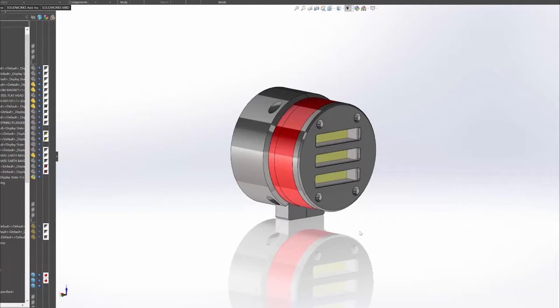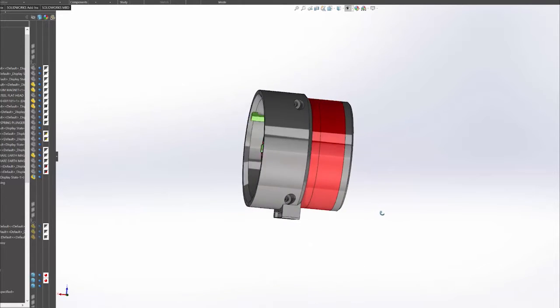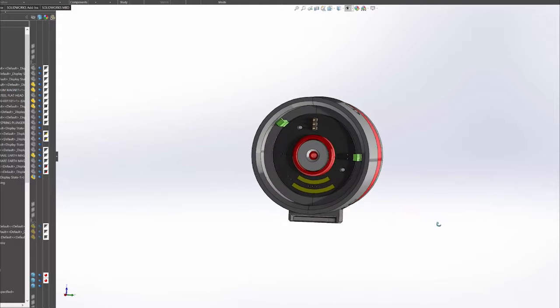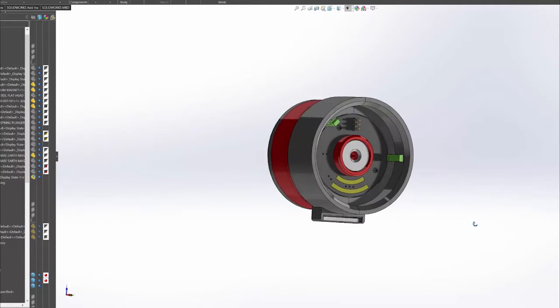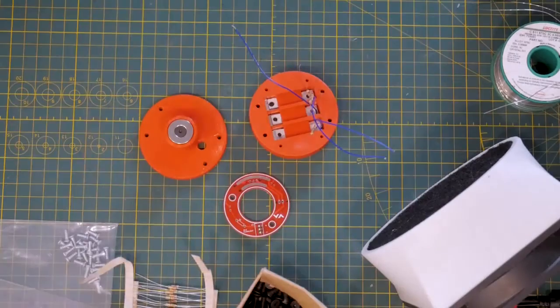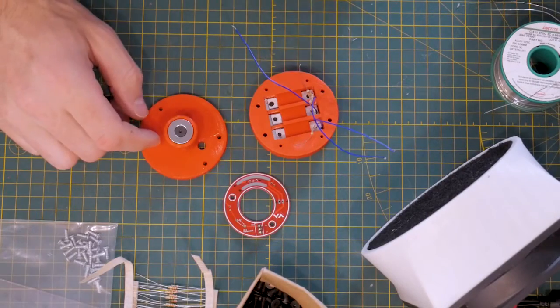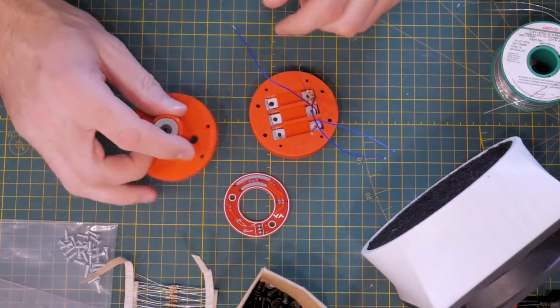When disassembling the dollar store lights, I had mentioned to save the small COB LED panels. As sort of a bonus device, I designed this tiny flashlight attachment using the COB panels. It mounts to a female receptacle and automatically turns on when the main power switch is turned on.